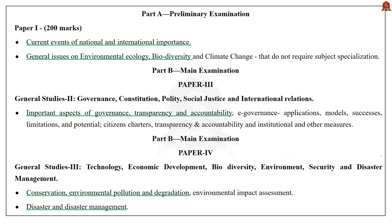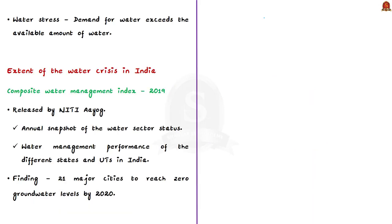According to the 2019 Composite Water Management Index, 21 major cities including Delhi, Bengaluru, Chennai, and Hyderabad were found to be reaching zero groundwater levels by 2020, affecting around 100 million people's access to groundwater. As shown in the representation, overall demand is expected to exceed supply twofold by the year 2030. If the current situation continues, water availability will deteriorate completely while India's water demand will exceed its supply, triggering severe water crisis for millions.